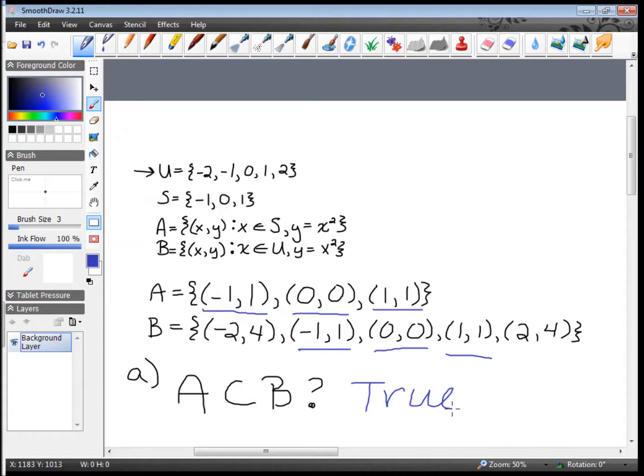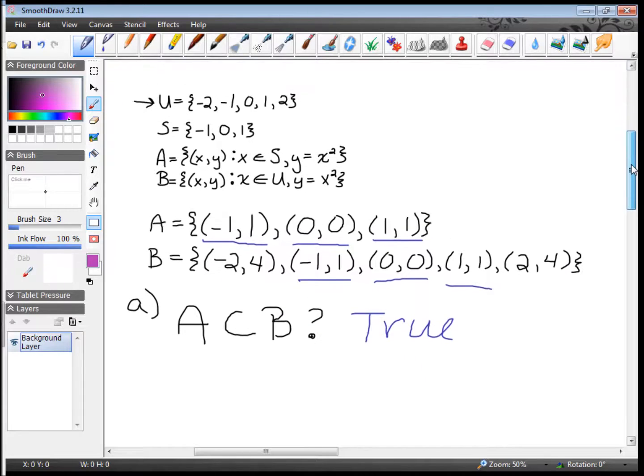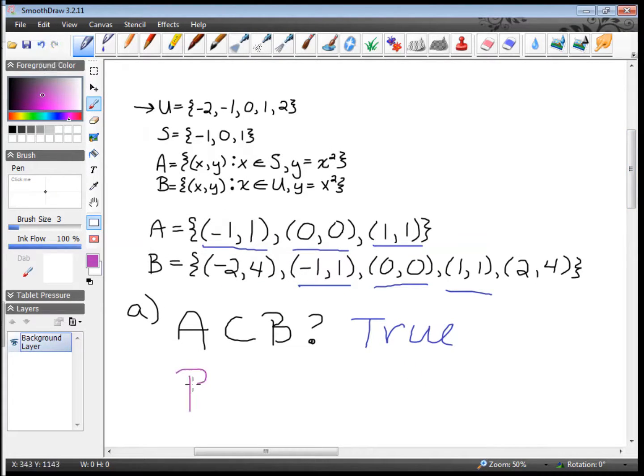To sidestep for a quick second though. What if they had asked us, and they didn't, but let's say they did: Is B contained in A? Well, is everything in B found in A? We know some of the things are, right here. But we don't have a (-2,4) and we don't have a (2,4). So no, this is false. The order that these two things happen, the direction the C is pointing in, kind of important. We're going to erase this because that's not the question.